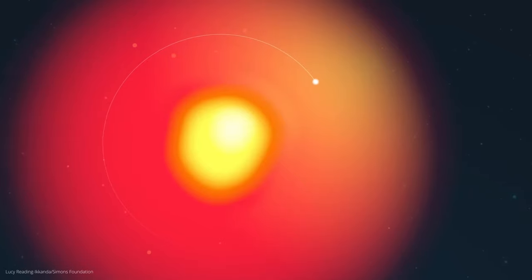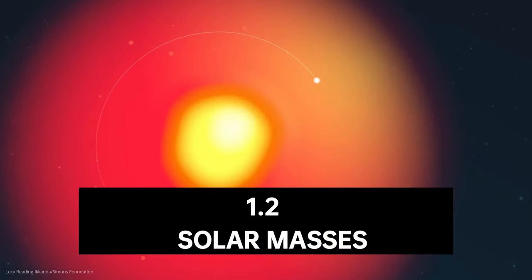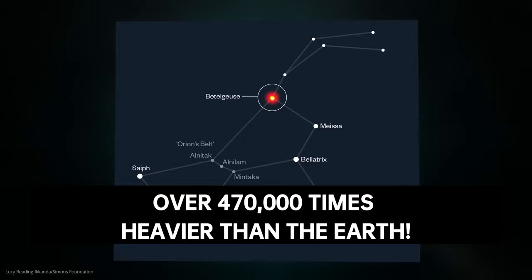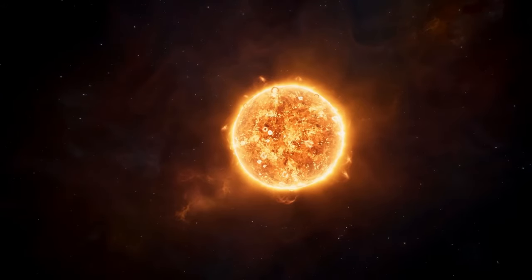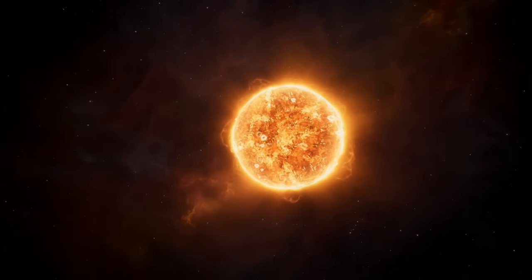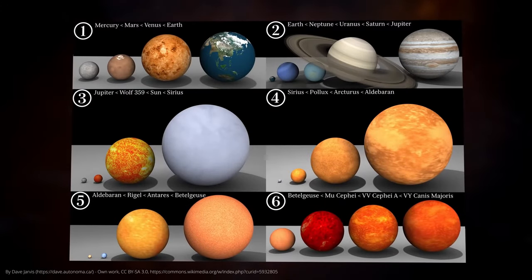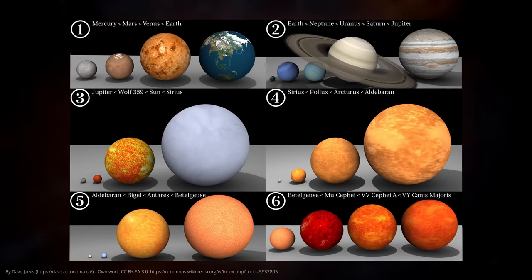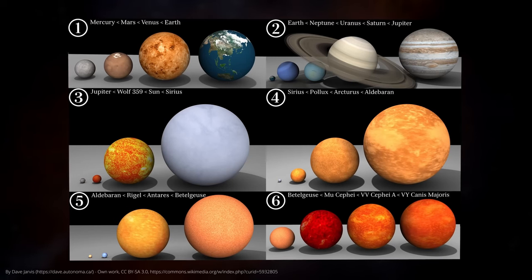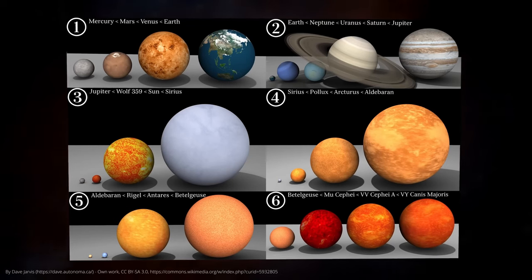The researchers were even able to determine that it appears to have a mass of about 1.2 solar masses, which is significantly lighter than Betelgeuse itself, which has a mass of about 16.5 to 19 solar masses. The distance between the two stars is about 2.4 times the radius of Betelgeuse. That doesn't sound like much, but considering that Betelgeuse itself is already about 764 times larger than the sun, it is an enormous distance.